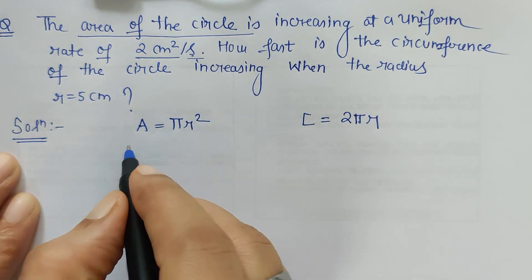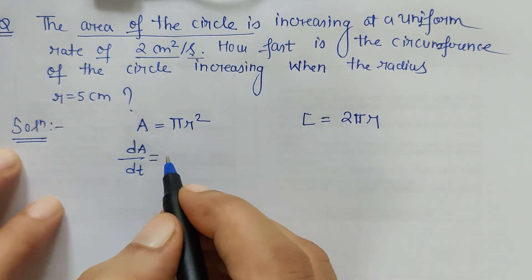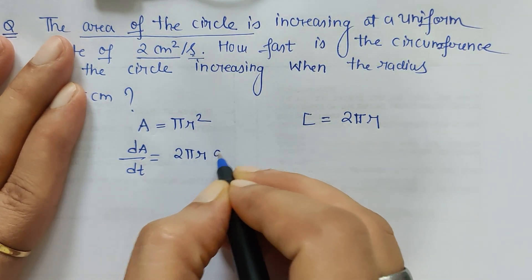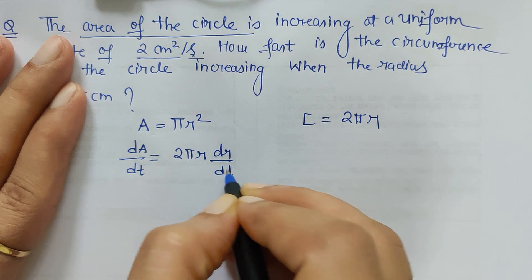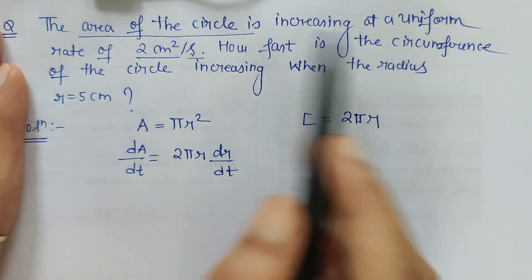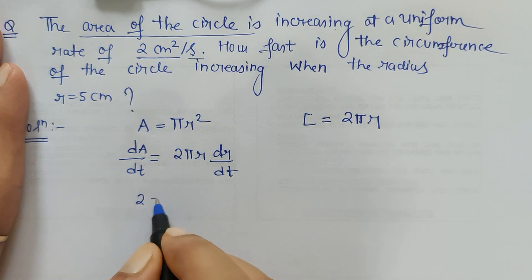So here I differentiate the area first. dA/dt is equal to 2πr dr/dt. Now what is dA/dt? We are given the area of the circle is increasing at a uniform rate of 2 centimeter square per second, that means this is given: 2 cm²/s.